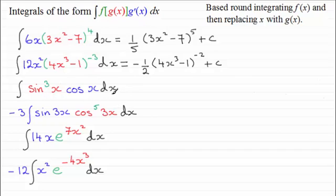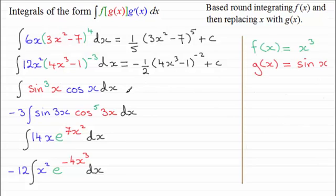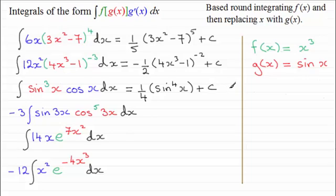You might want to pause the video and have a go at this yourself. G of x is sine x and f of x is x cubed. Integrating x cubed gives a quarter x to the power 4. We replace x with g of x — sine x — so we end up with a quarter times sine x all to the power 4, which I'd write as one quarter sine to the power 4 of x, plus the constant of integration C.